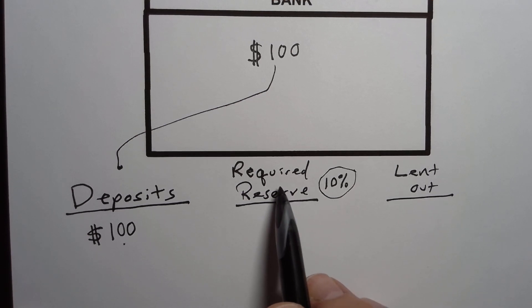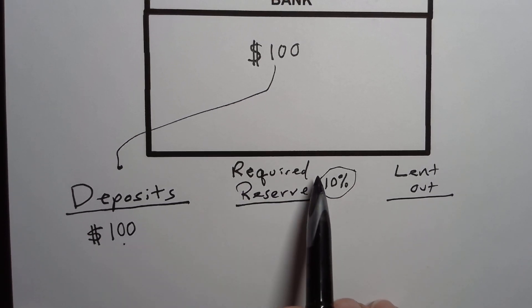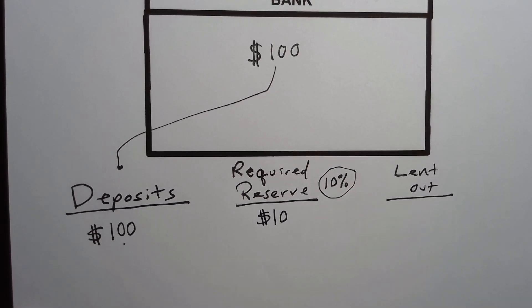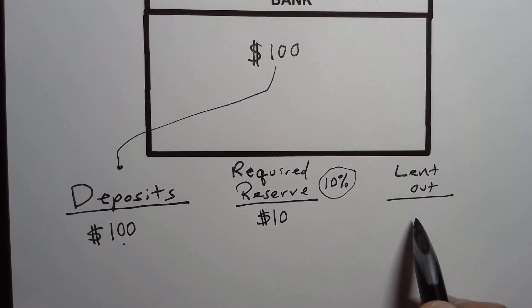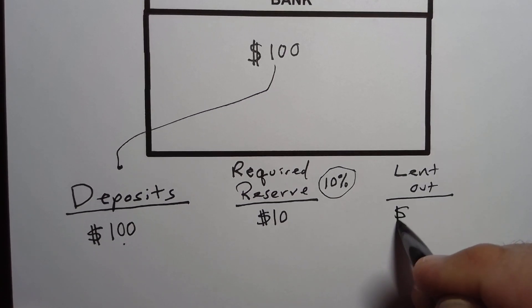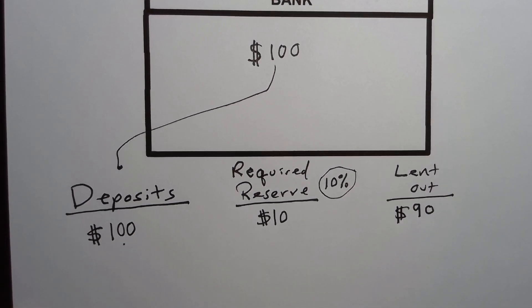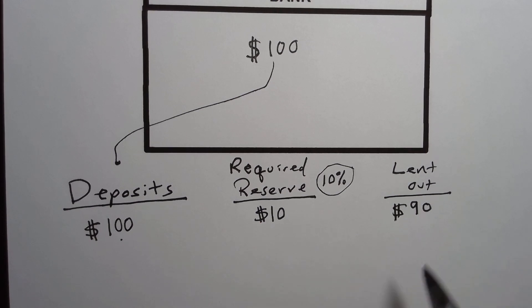So that means of this hundred dollars, they only need to keep 10% on hand. In other words, $10. So they're going to keep $10 at the bank and they're going to lend out the rest. So they're going to lend out $90 to some other customer. That $90 then goes into the economy.